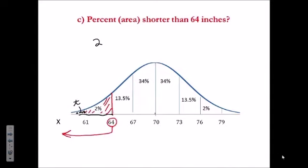And this little piece here is tiny, so we can ignore that. So the percent of Danish men that are shorter than 64 inches would be about 2 percent, roughly 2 percent.